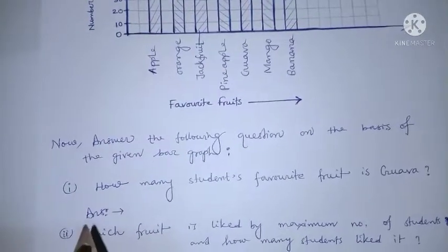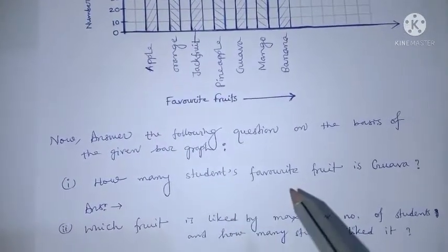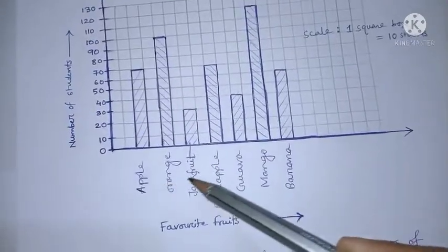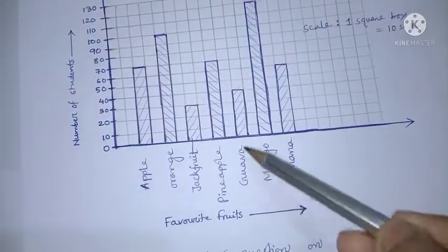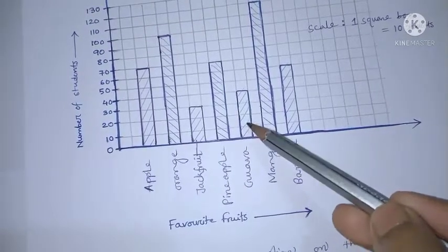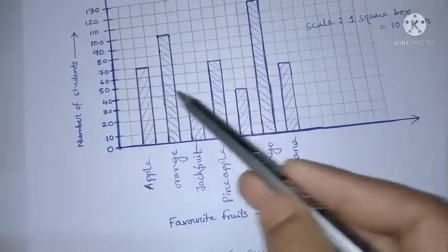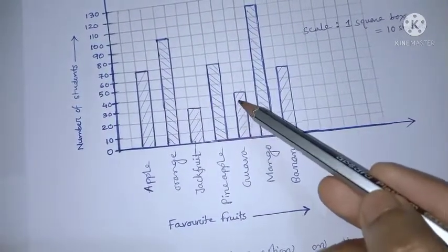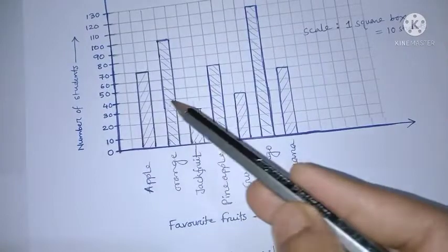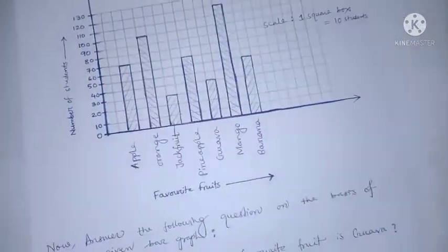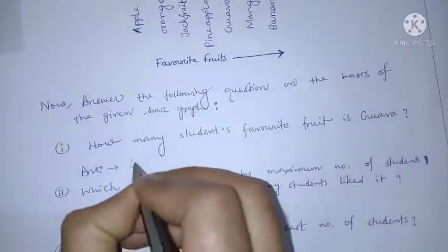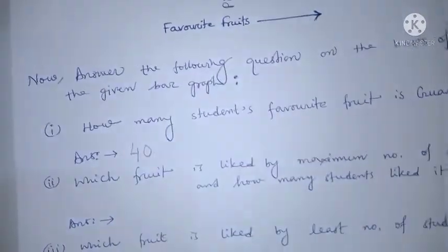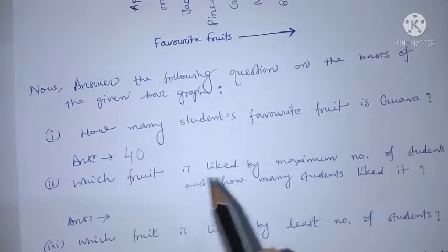First question: how many students' favorite fruit is guava? See guava — the level is 40 and there are four boxes, so 40 students' favorite fruit is guava.